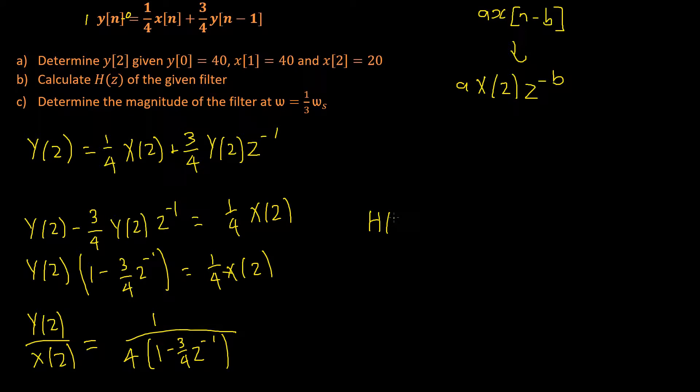Therefore, our h of z is equal to 1 divided by, now let's expand these brackets, 4 multiplied by 1 will give us 4, minus 3 quarters multiplied by 4 will give us 3 times z to the power of negative 1. And there we have it, we've calculated b. That is our frequency response of our filter.